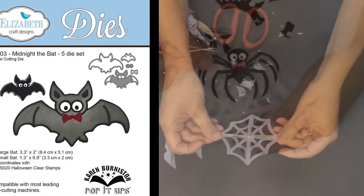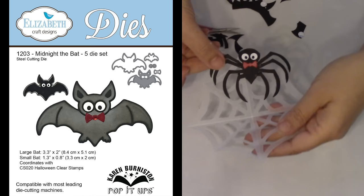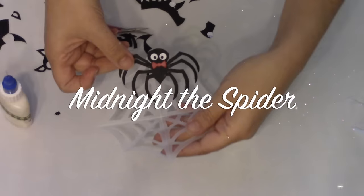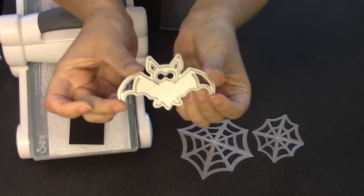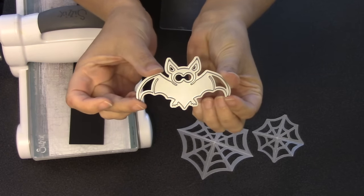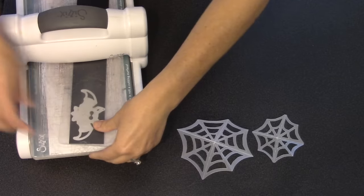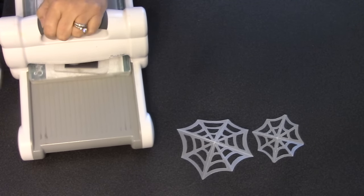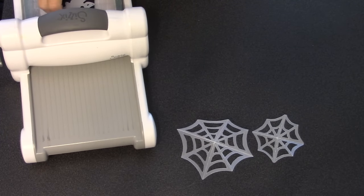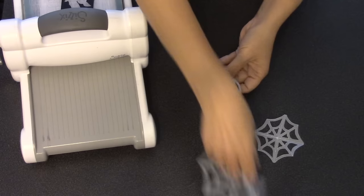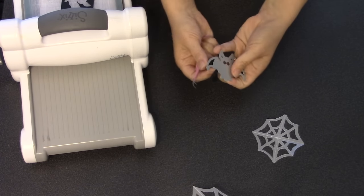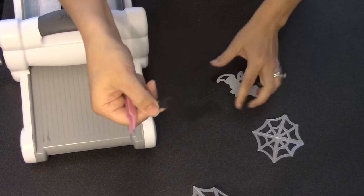My newest character die is Midnight the Bat, but for today's card he's going to be converted into Midnight the Spider. To make my spider I'm going to need four of the detail layers from Midnight the Bat and I'm going to cut all four of those out of black cardstock. Pop It Up's dies can be cut in any of the major die cutting machines. Today I'm using a Sizzix Big Shot and I will need to cut four of these Midnight the Bat detail layers to make my spider.